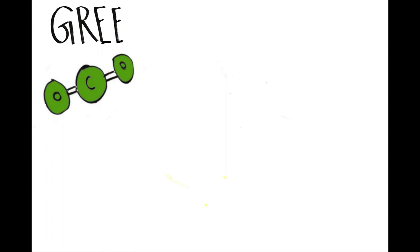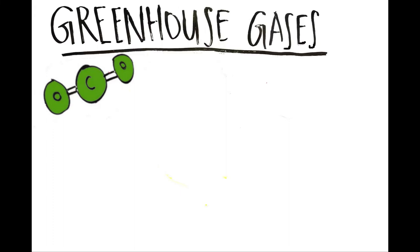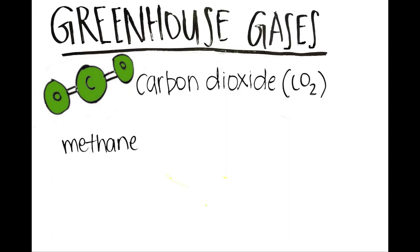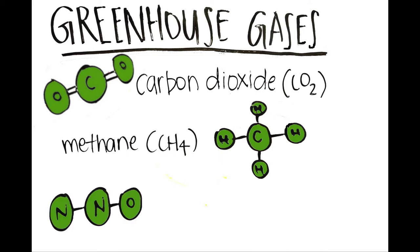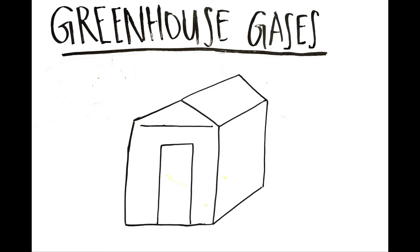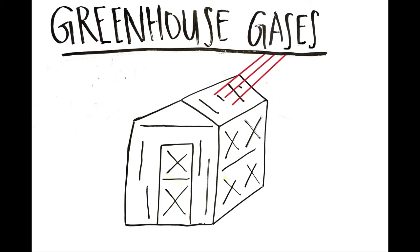The most common greenhouse gas is carbon dioxide, but other gases like methane, or CH4, and nitrous oxide, or N2O, also work the same way to heat the Earth's surface. They're called greenhouse gases because they act like the glass in a greenhouse, which allows light in and heats the room by trapping some of this energy.